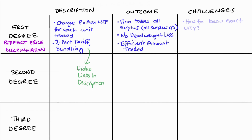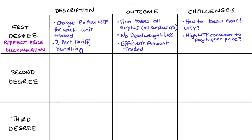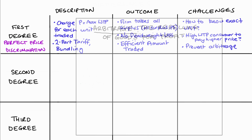As for the challenges of first degree — it is really difficult to achieve. The firm has to know the highest willingness to pay for each consumer for the product they're selling, and this seems like a mammoth task. The firm also has to make sure that consumers with a higher willingness to pay actually pay the higher price and not the lower price being offered to others. The firm also has to prevent what we call arbitrage — the reselling of goods for profit.